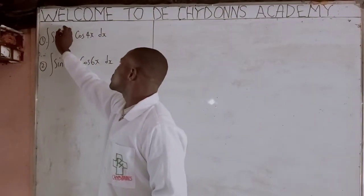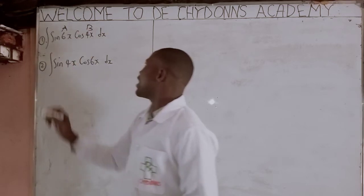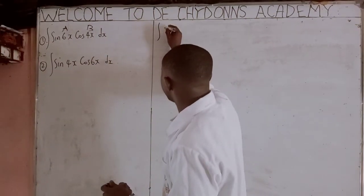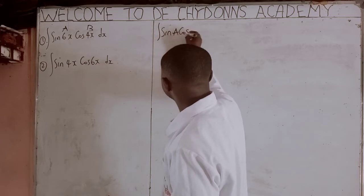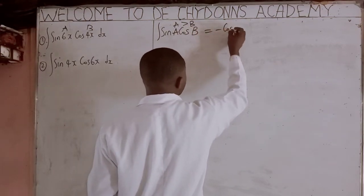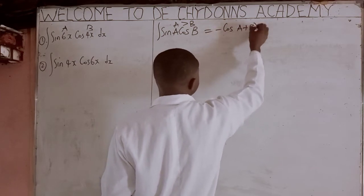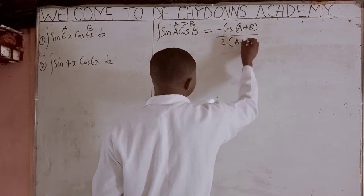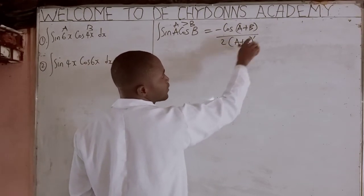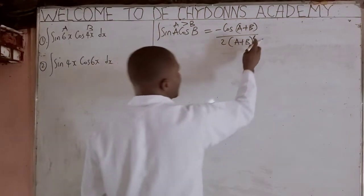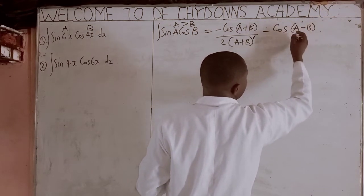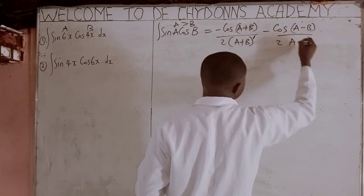For the first question, call this your A and call this your B. Ask yourself: is A greater than B? Yes. Then you can say the integration of sin A cos B, where A is greater than B. The shortcut is: minus cos(A + B), all over 2(A + B)', this symbol means you are to differentiate A + B — that is one prime. Then minus cos(A − B), all over 2(A − B)'.